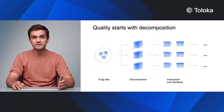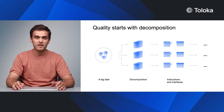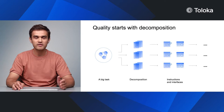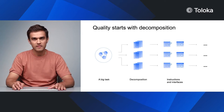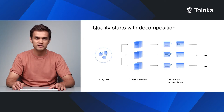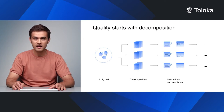Designing quality control is a multi-stage process. It starts with thinking through the task's logic and ends with smart aggregation of your results. The first step involves breaking down the task, putting together good instructions, and designing a clear and usable interface. We discussed how to deal with these challenges in previous videos.